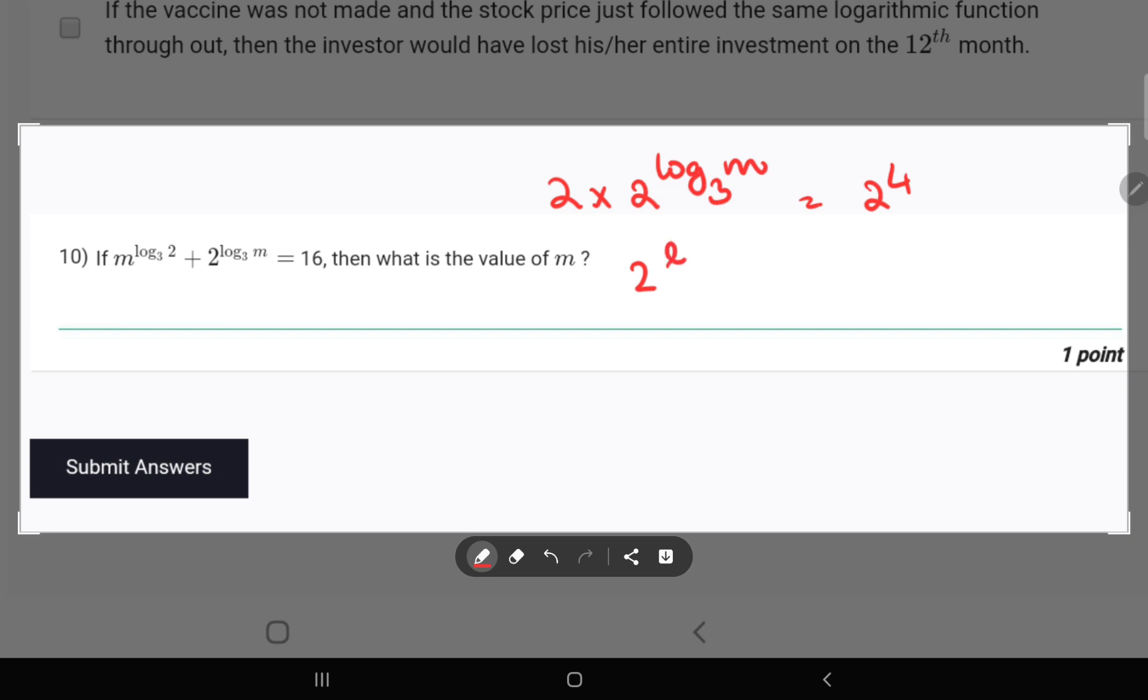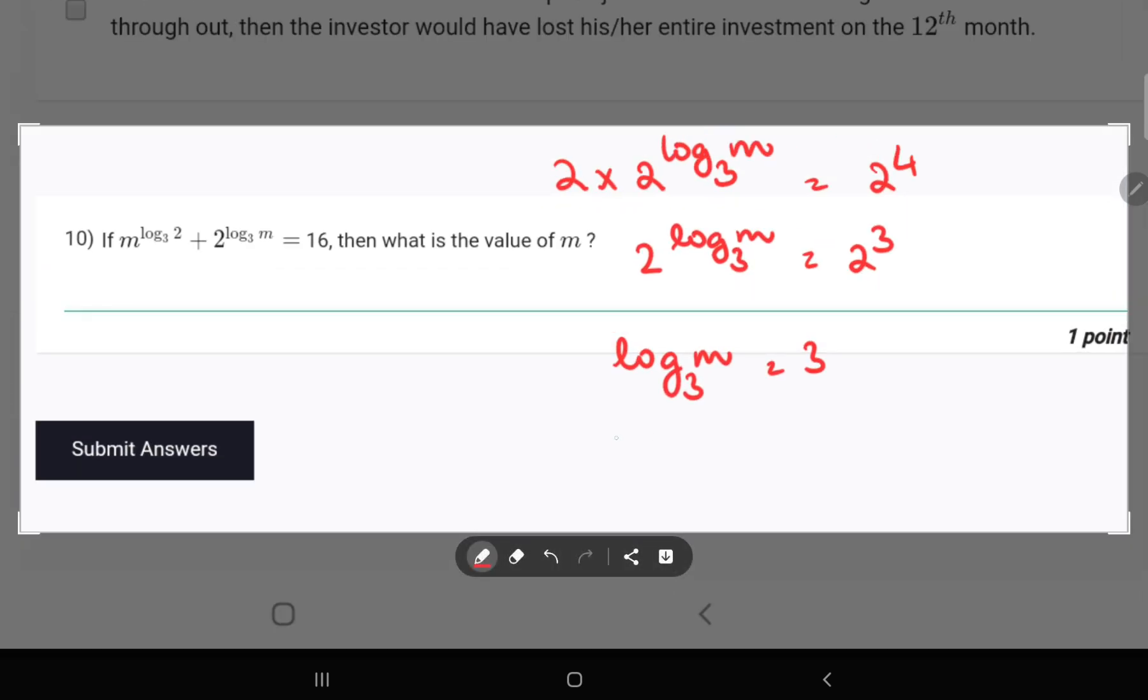Using this, we can also conclude that log m to the base 3 equals 3. And from this, m equals 3 raised to power 3 using the exponential property of logarithm.